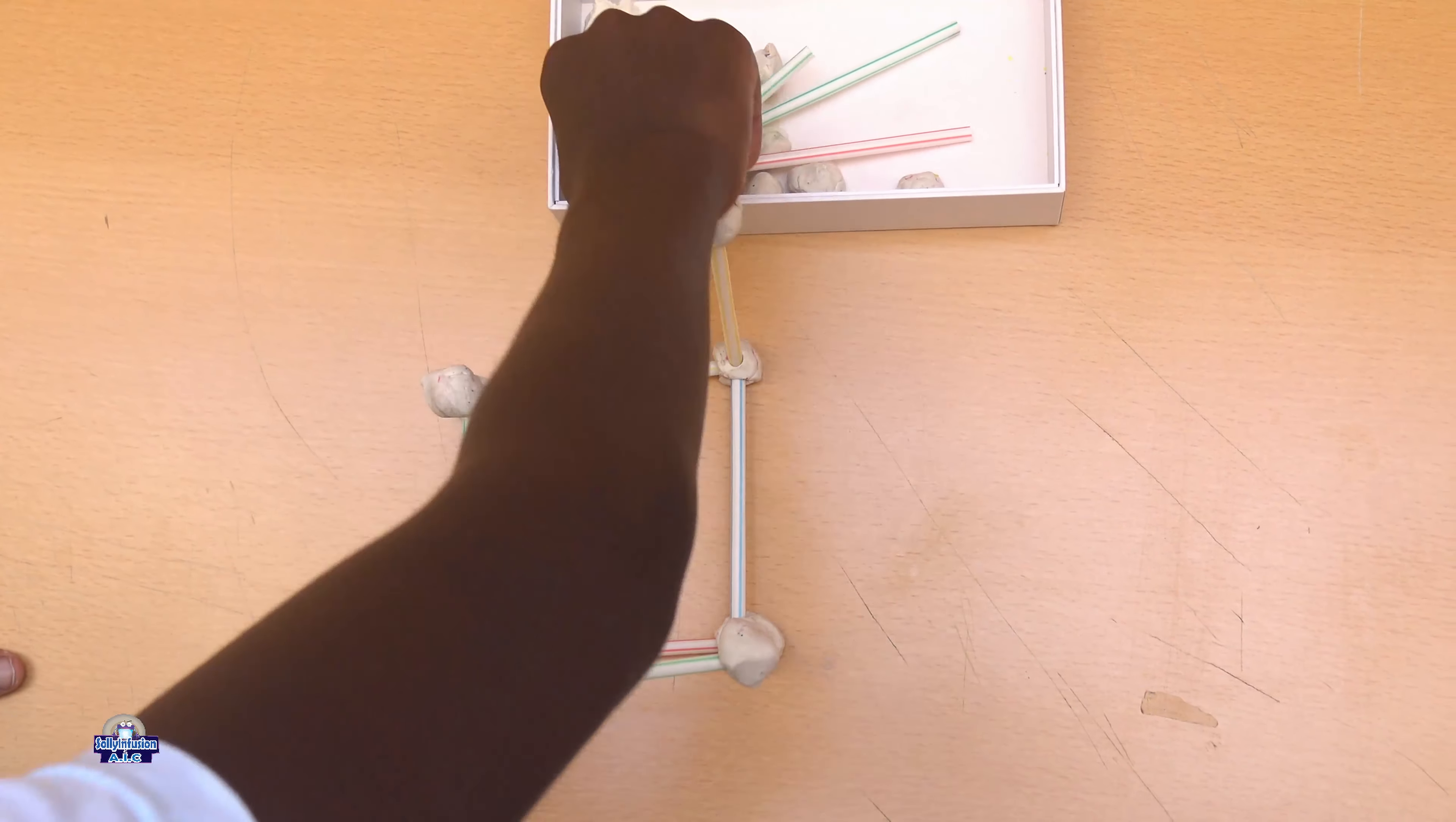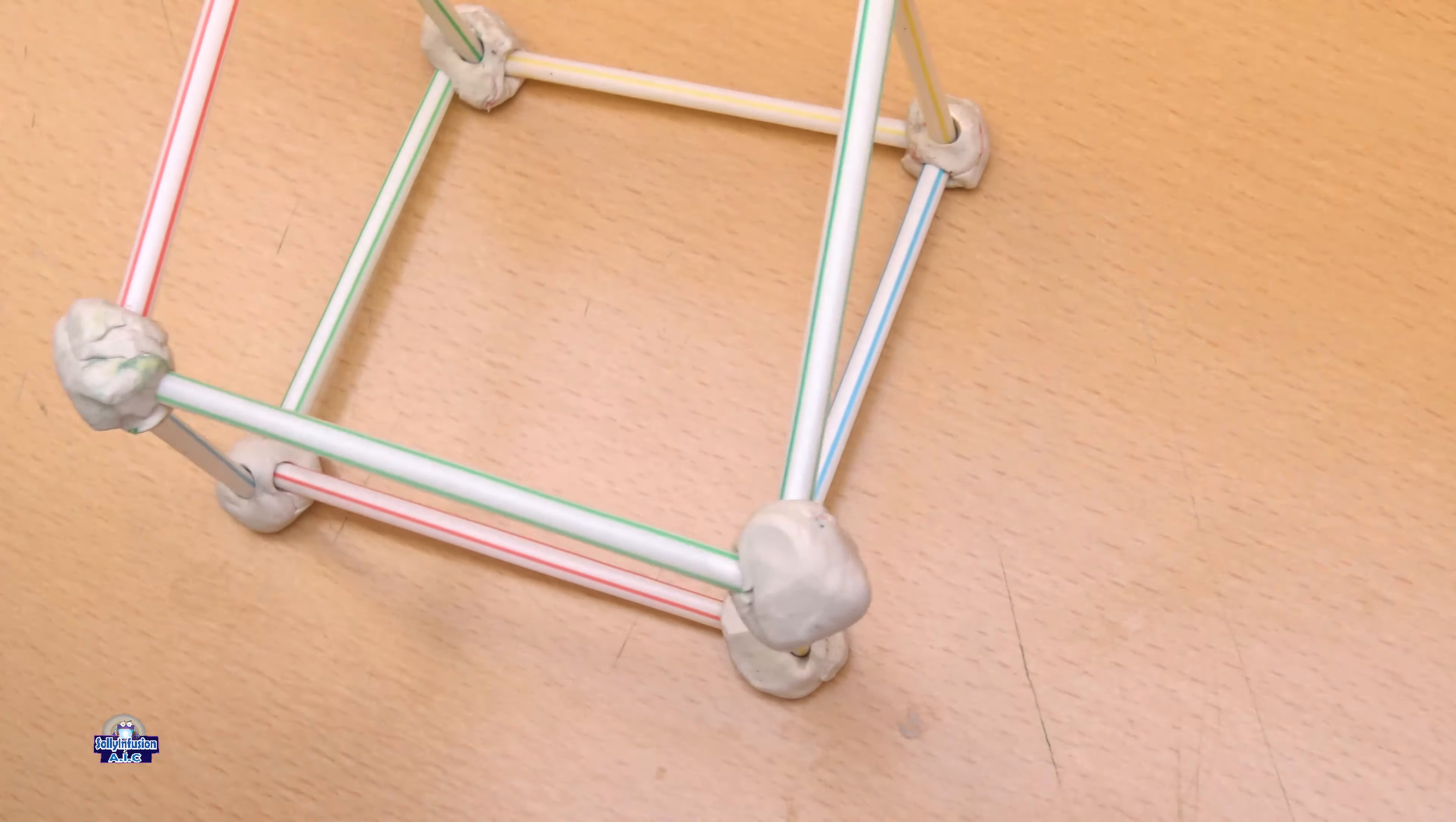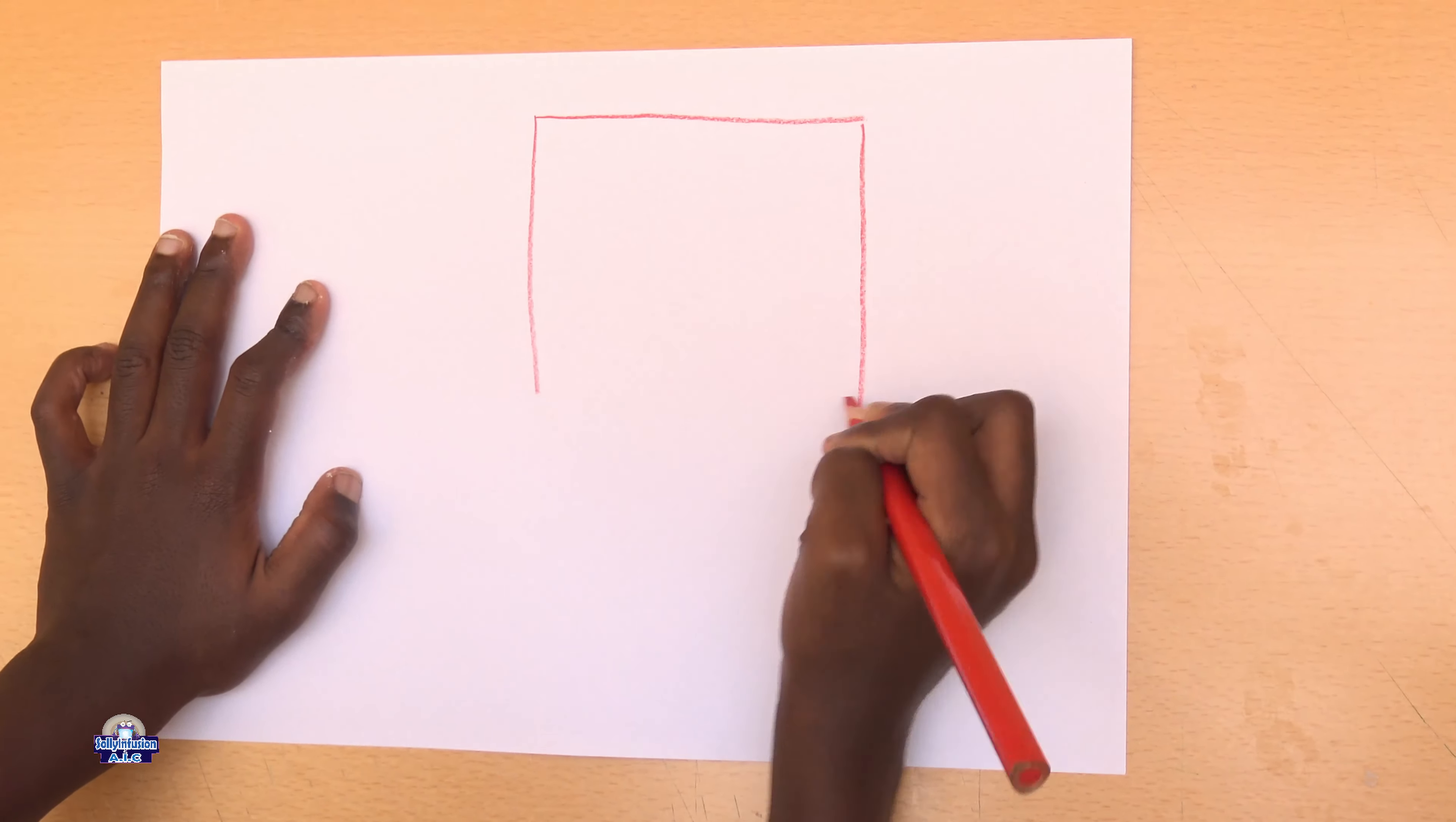Let's model a cube using clay and straws. You can also use Play-Doh. Let's draw a cube shape.